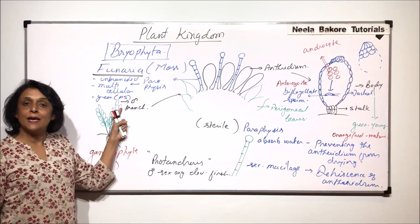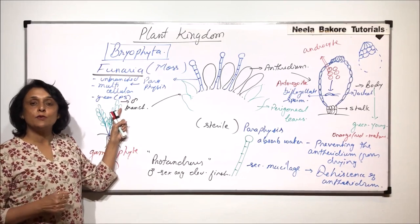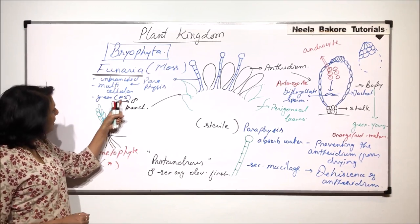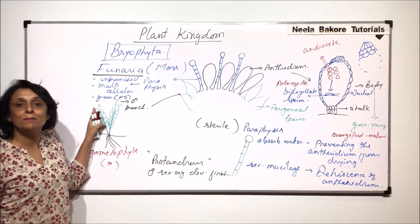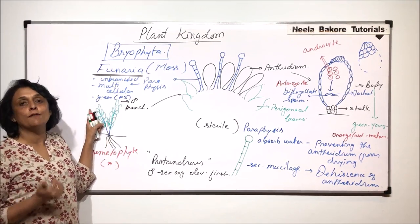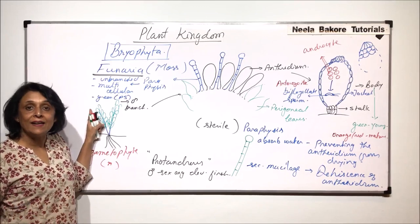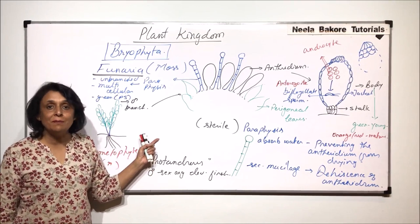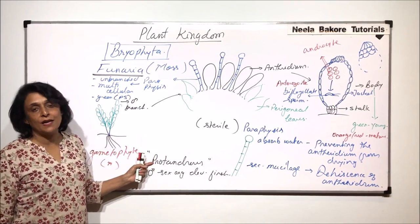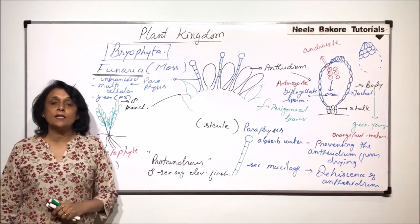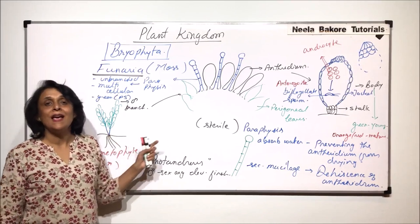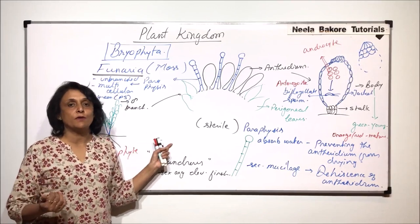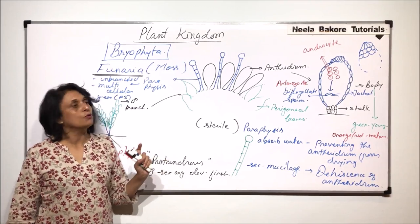That means the male branch will develop first. Male gametes will be formed first. And even if they swim up to the female branch, the egg or the female gamete is not ready yet. So the chances of self fertilization are minimized and cross fertilization would take place. Cross fertilization ensures mixing of genes, and that is always better for adaptation and evolution.